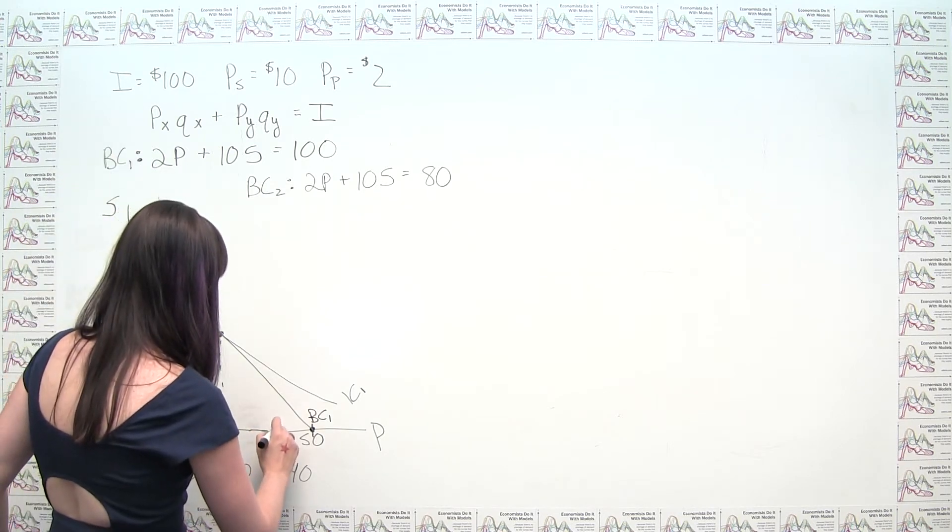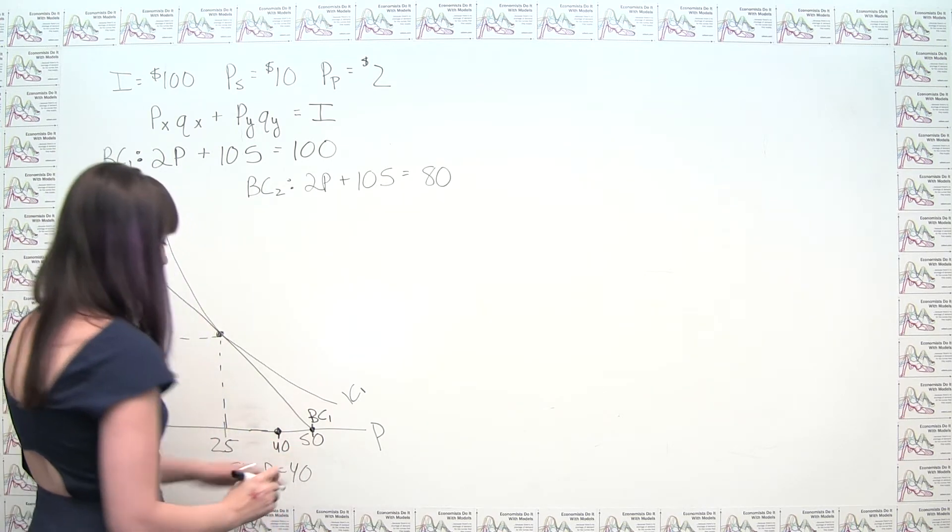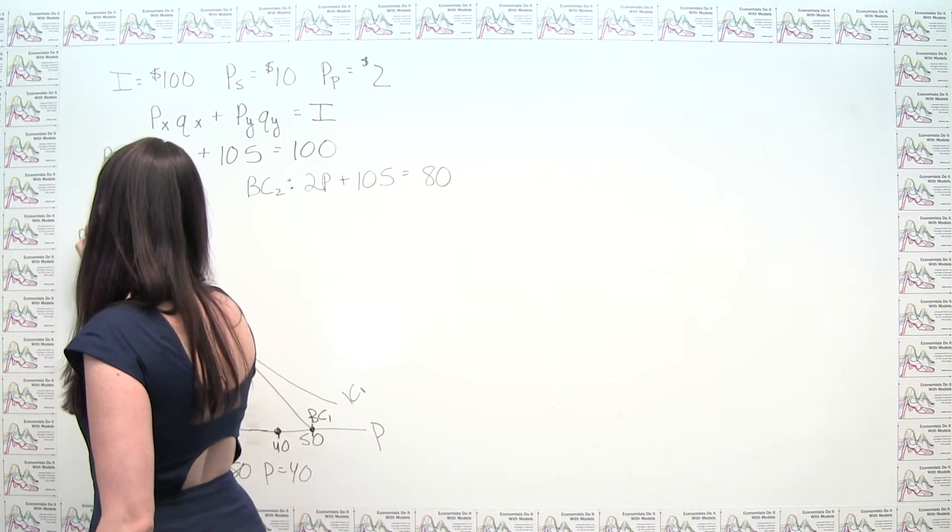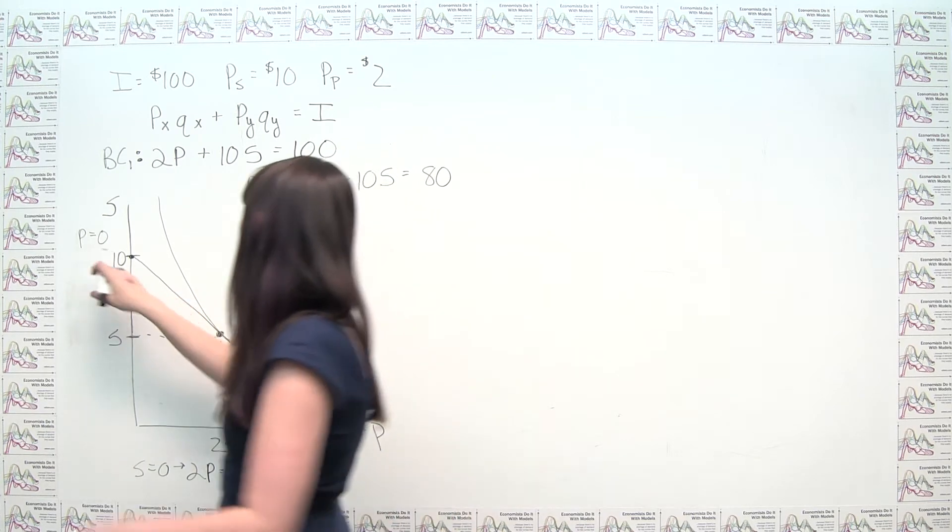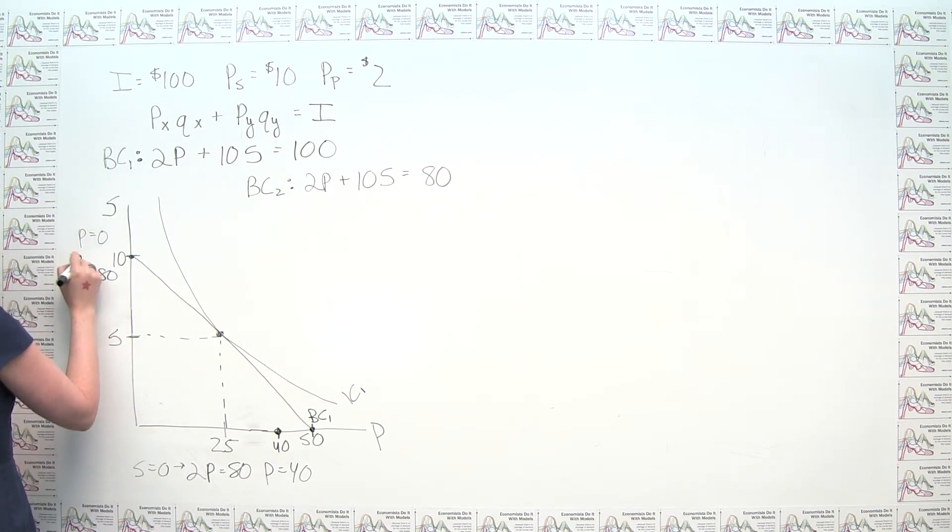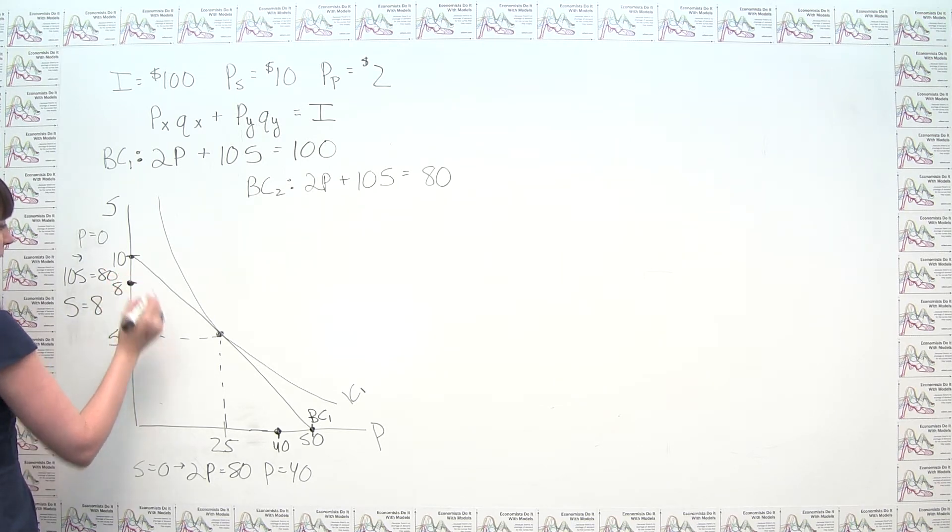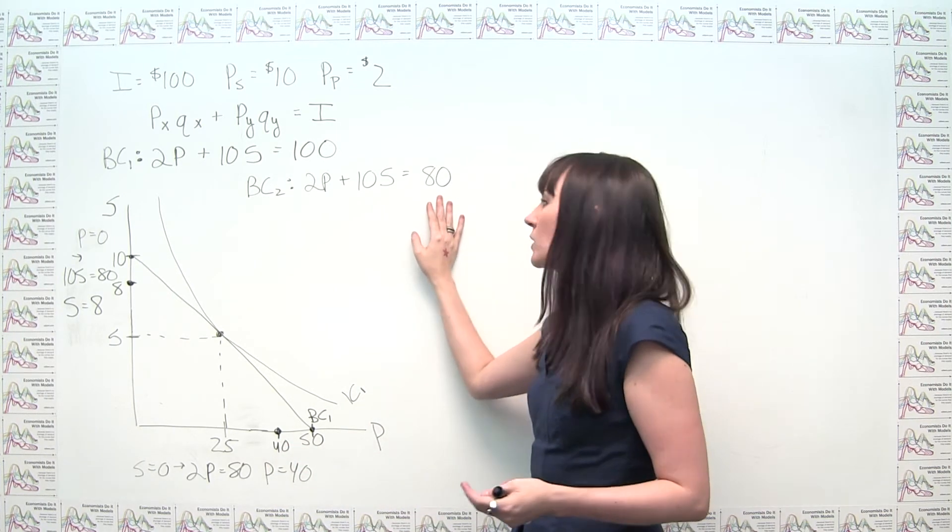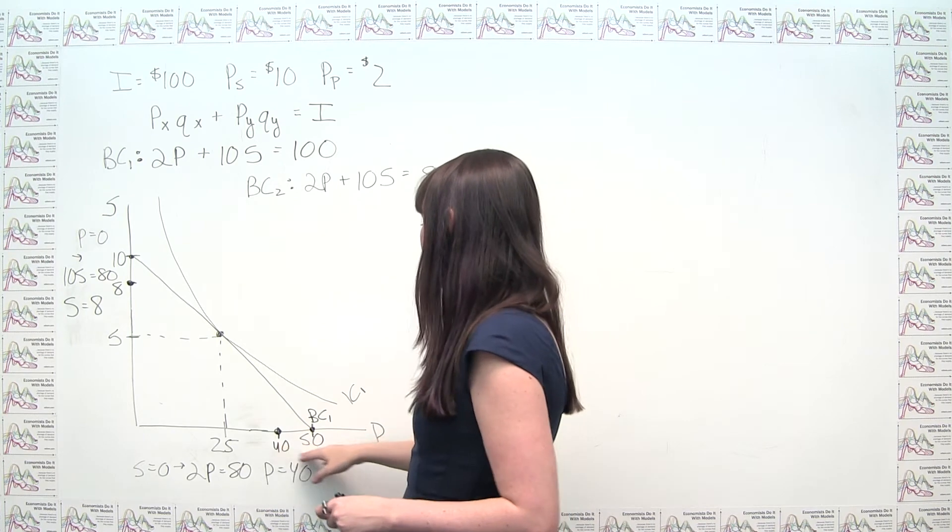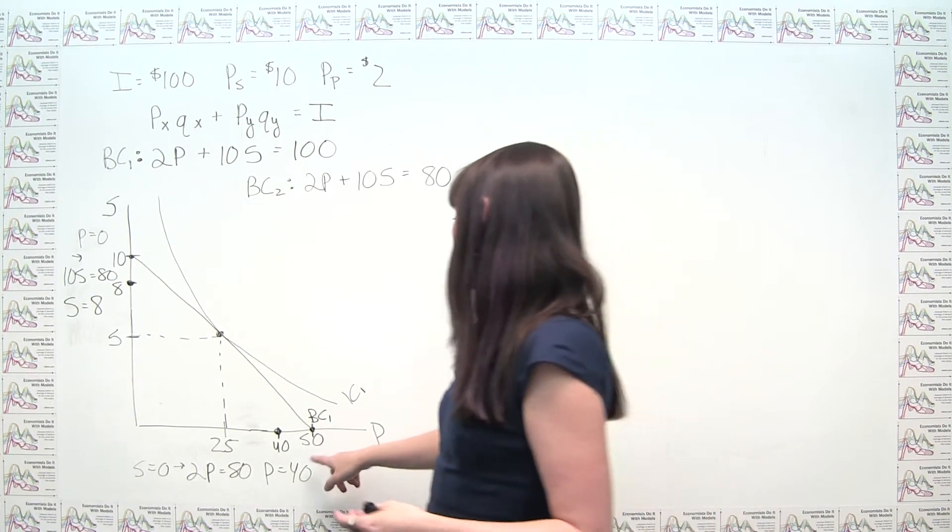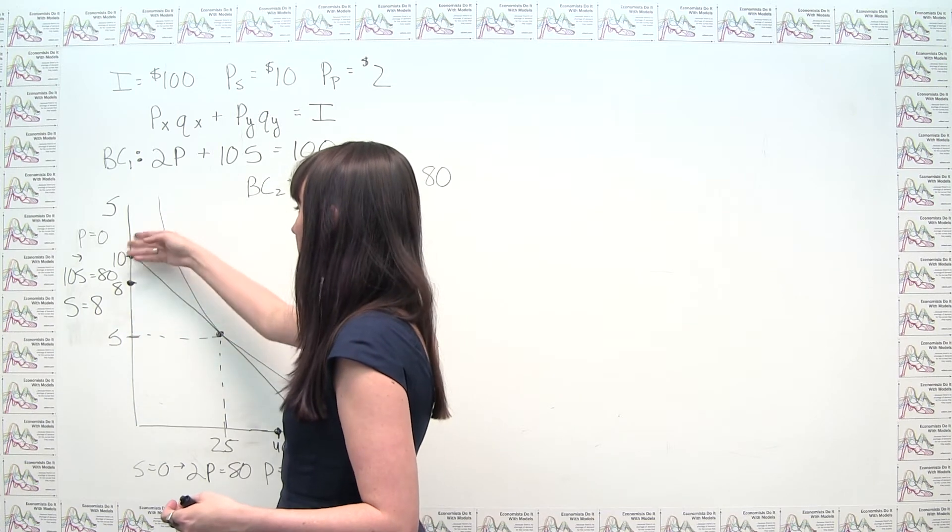So our new point is about here, on the p-axis. And then on the s-axis, this is just where p is equal to 0. So if p is equal to 0, this part drops out, and we get 10s equals 80, or s equals 8. It's probably about here. Now these numbers shouldn't be terribly surprising, because basically our income went down by 20%. So if our income went down by 20%, then the amount of the goods that we are able to afford goes down by 20%. And 50 minus 20% of 50 is 40. 10 minus 20% of 10 is 8.